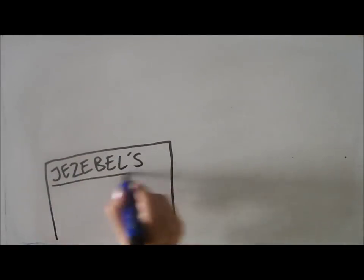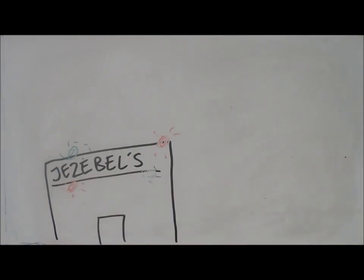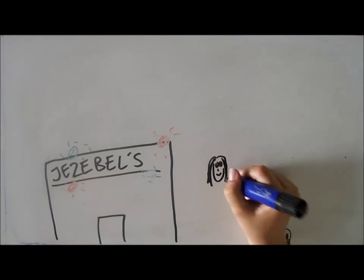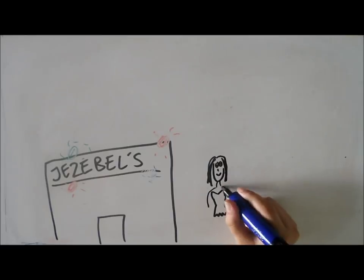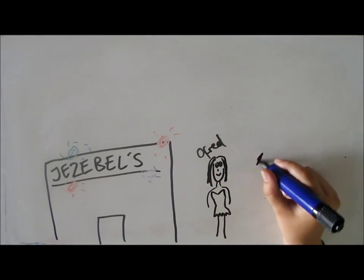The same night that Offred is supposed to have sex with Nick, the commander gives her a revealing outfit to wear and takes her to a club called Jezebel's where commanders can mingle with prostitutes.